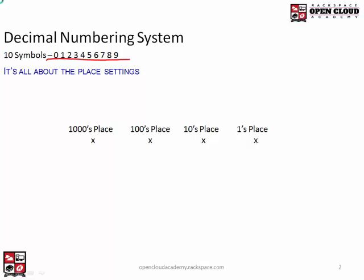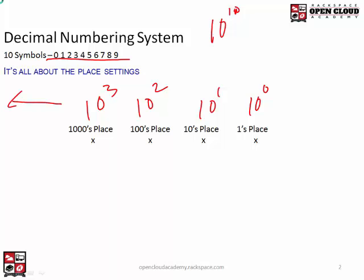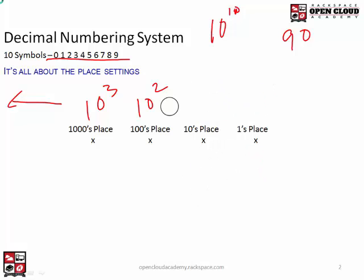If we look at decimal, these are called place settings. It's a power of ten numbering system, so everything's in the powers of ten. So this would be ten to the zero power, ten to the one, ten to the two, ten to the three, and it goes on forever. These are just four place settings. Whatever you write underneath the place setting represents how many of that place setting you have.